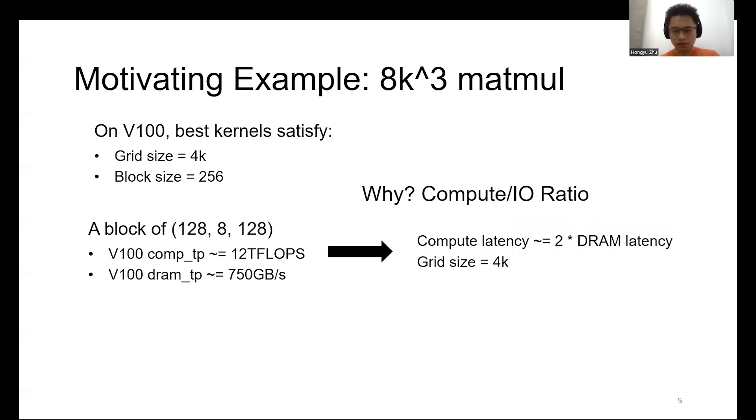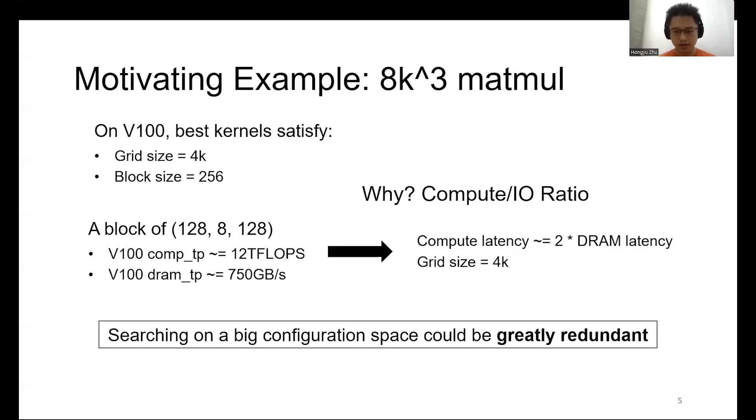However, if we take a closer look at the kernel program results, we will find great redundancy here. We used state-of-the-art compilers to generate kernel programs for 8K matrix multiplication on V100. We found that the best kernels almost always have grid size of 4K and block size of 256. One of the reasons for that is the compute and I/O ratio. If we calculate the compute and memory latencies for the block configurations in the best kernels, we will find that the memory latency is less than, but also very close to the compute latency. This gives us a hint that the optimal matrix multiplication kernels are often the ones that can balance the compute and memory resources. We have an opportunity to avoid extensive search on the huge configuration space.